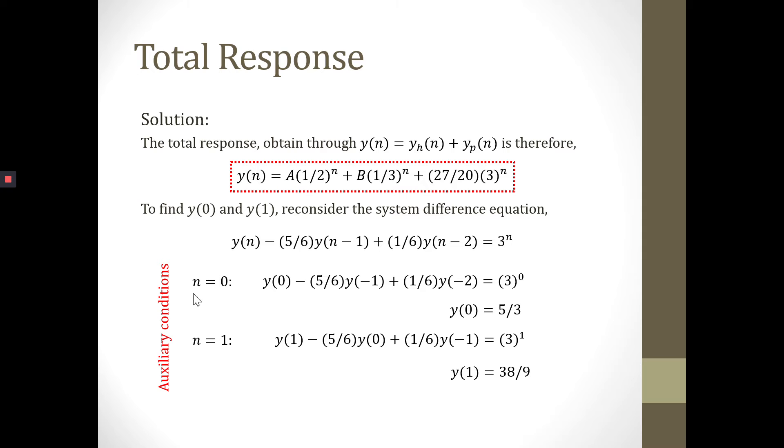Next, we determine this equation for N equals 0. We plug in N equals 0 in this equation. Please remember that we also have the initial conditions given in the equation: Y(-1) equals 1 and Y(-2) equals 1. We use these conditions to solve for Y(0). In this case, we have 5/3 for Y(0).